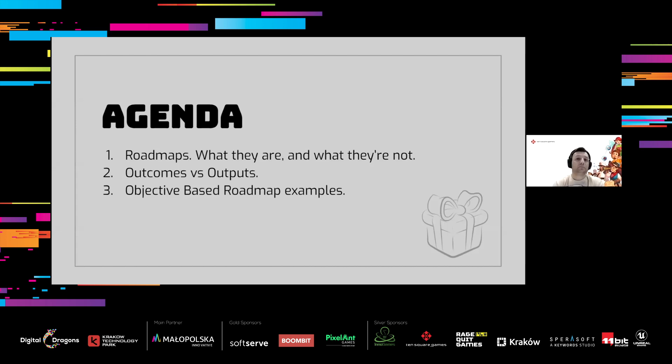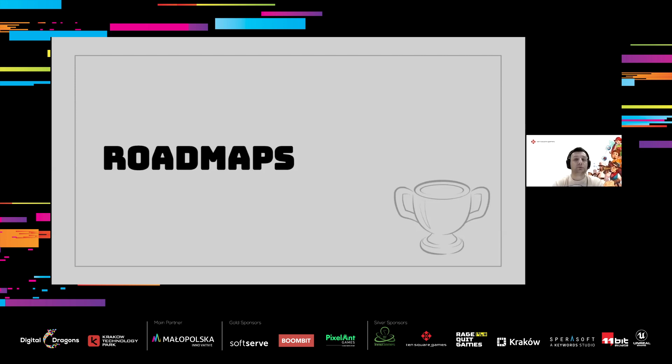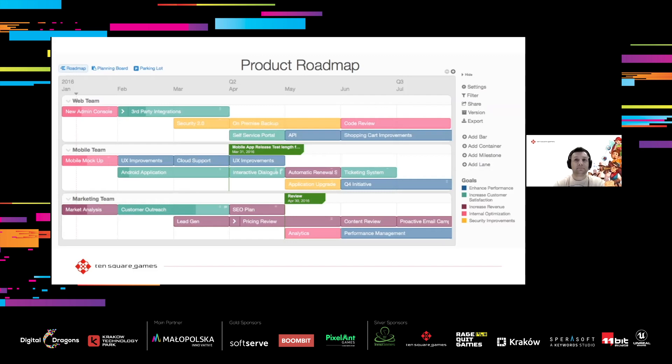Roadmaps — we all use them, love them, hate them. They're usually pretty central to every product organization. Some of you most likely use roadmaps which look like this. It looks very standard. I think it's from ProductPlan — one of their example pictures. It's nice and colorful and very detailed.